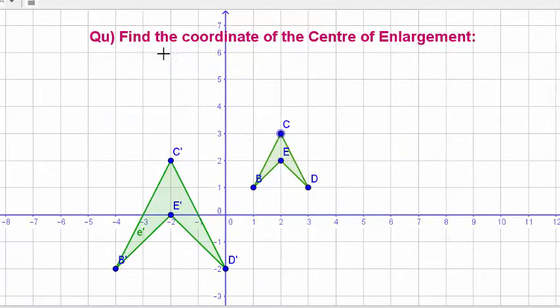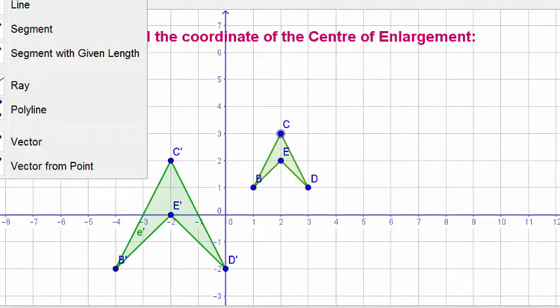So this first problem, we're going to find the coordinates of the center of enlargement. Now here we have an enlarged shape - an original object here and its enlargement there. We know it's the enlargement because that's C and that's C dash, that's D and that's D dash, so that must be the enlargement of that.